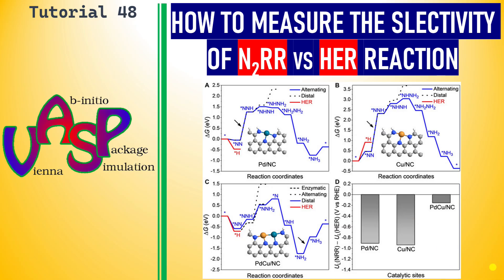Dear friends, this is tutorial 48 in VASP. In this tutorial I am going to teach you how to measure the selectivity of nitrogen dinitrogen reduction reaction (NRR) with hydrogen evolution reaction (HER).